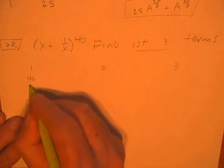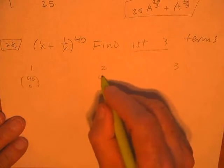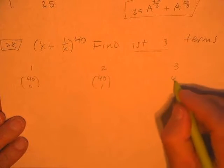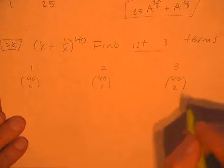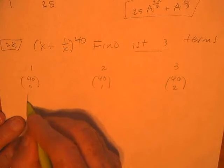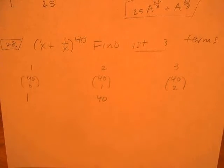So this one's going to be 40 choose 0. That one's going to be 40 choose 1. This is going to be 40 choose 2. Well, I know this is 1, and I know this is 40.